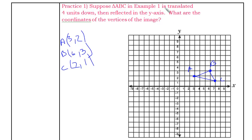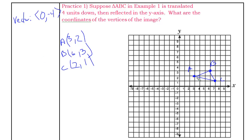Now it's going to translate 4 units down. Writing that as a vector: it doesn't affect the x-value at all, it doesn't move right or left, but it moves 4 down — so that's the vector (0, −4). All points slide 4 units down. So the triangle shifts down here — that's the translation, 4 units down.